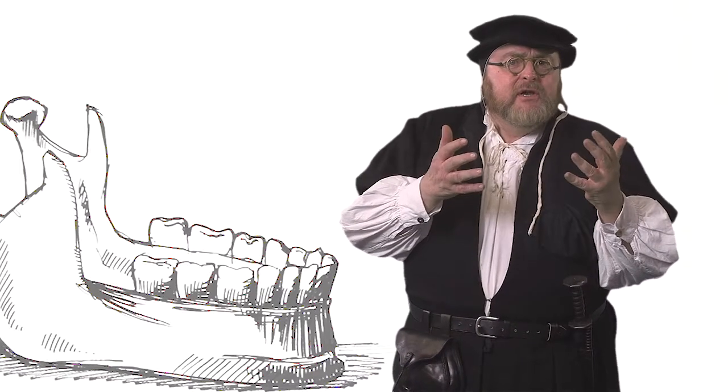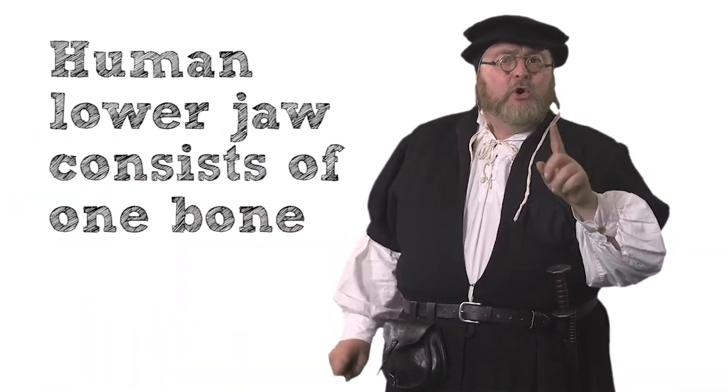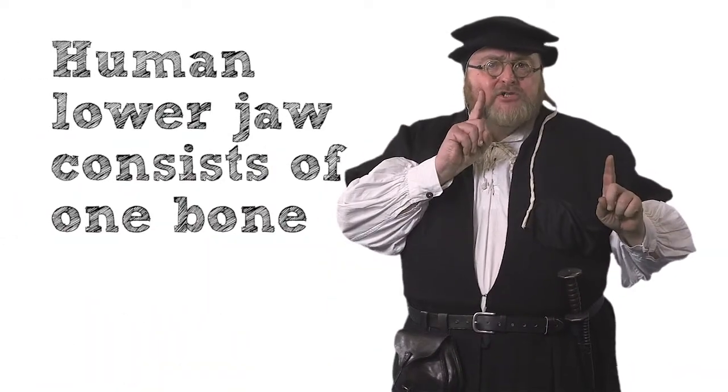Take for instance his description of the human lower jaw bone. Galen insists that it's made up of two separate bones, but I have dissected many human jaws and I can tell you that the lower jaw consists of one piece of bone.